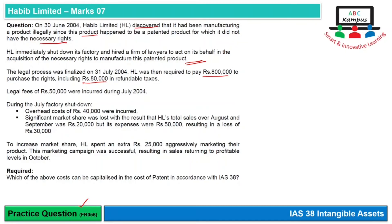Legal fees of Rs. 50,000 were incurred during July 2004 — these are directly attributable costs and should be added. During the July factory shutdown, overhead costs of Rs. 40,000 were incurred — however, these were not necessary to acquire the asset and should not be included. Additionally, significant market share was lost, resulting in a loss of Rs. 30,000 — this is also not relevant to the asset acquisition and should not be capitalized.